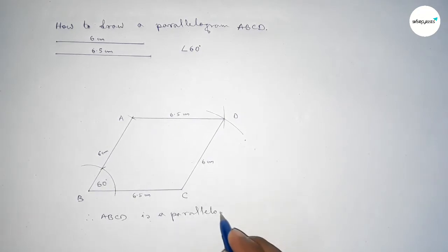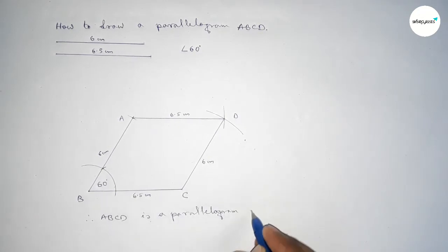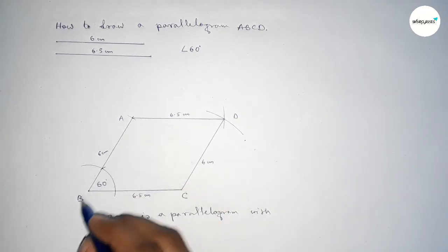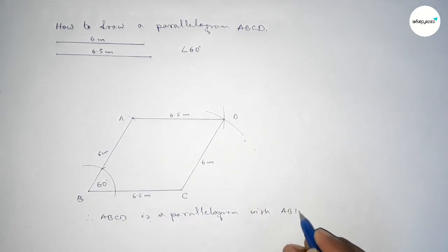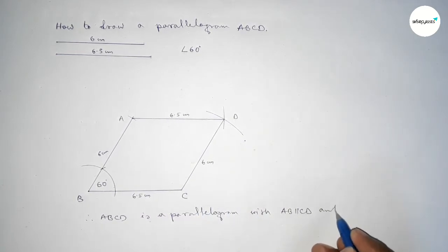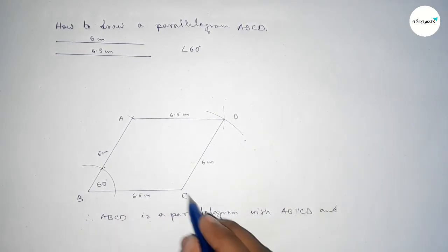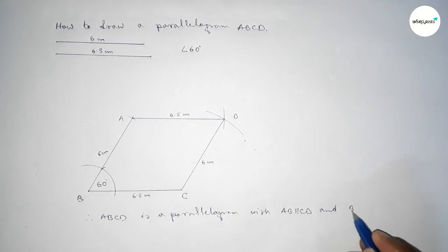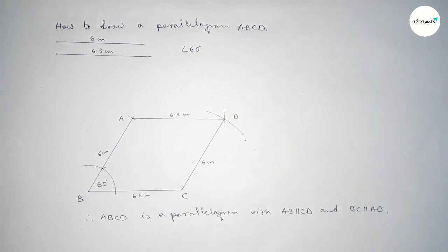ABCD is a parallelogram with AB parallel to CD and BC parallel to AD. The length of AB equals CD, and BC equals AD. That's all — thanks for watching.